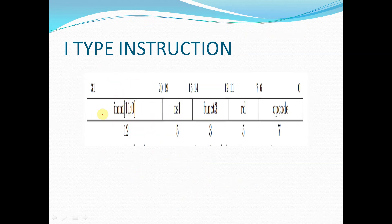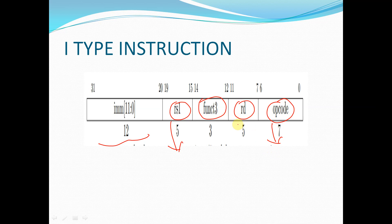Now let us see the I-Type instruction format. Bits 31 down to 20 — the 12 bits — will be the immediate value. The next 5 bits will be the RS1 address, which is the address for source register 1. Then comes funct3, followed by RD which is the destination register address, and finally the opcode. This opcode is different for I-Type instructions compared to R-Type instructions.